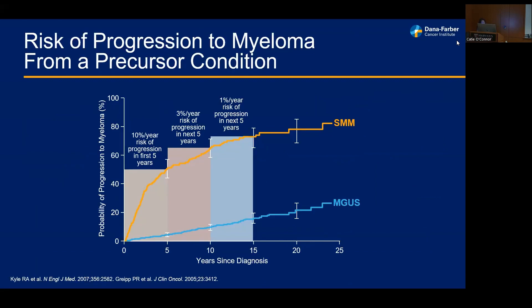On the heterogeneity of progression in smoldering myeloma and MGUS: a study by Dr. Kyle at Mayo Clinic looked at the kinetics of progression among patients with these precursor conditions. Within the first five years after diagnosis of smoldering myeloma, the risk does appear to be 10% per year. Subsequently, among patients who do not progress, the risk drops to 3% per year in the next five years, and then 1% per year in subsequent years. Whereas in MGUS, the slope seems constant at roughly 1% per year.